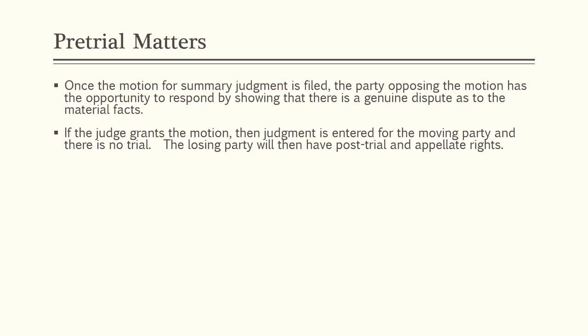If the judge grants the motion for summary judgment, judgment is entered for the moving party and there is no trial — the losing party will then have post-trial and appellate rights. If the judge denies the motion in whole or in part, there will be a trial. Sometimes the judge will grant summary judgment only on certain counts — for example, finding no breach of contract claim but allowing a fraud claim to proceed — which winnows down the claims to be tried. You can also file a motion for partial summary judgment, addressing only the claims where there is truly no material dispute of fact.